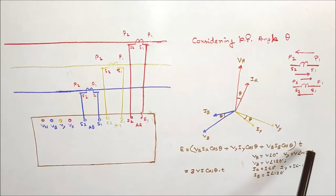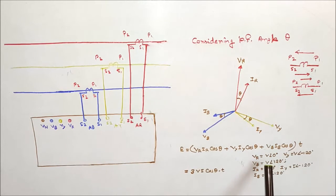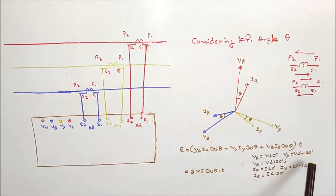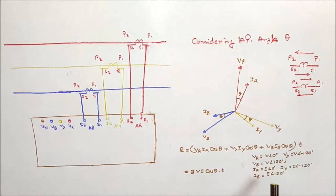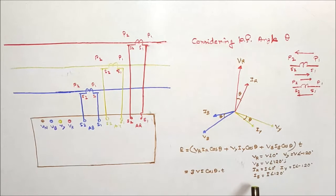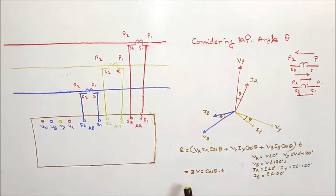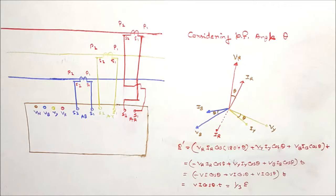Since it is a balanced three-phase supply, we can write: VR = V at angle 0°, VY = V at angle −120°, and VB = V at angle +120°. Similarly, IR = I at angle 0°, IY = I at angle −120°, and IB = I at angle +120°. Therefore the three-phase energy comes as 3·V·I·cos(theta)·T.